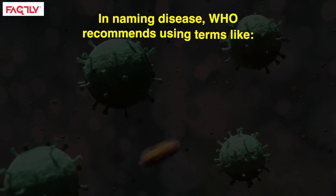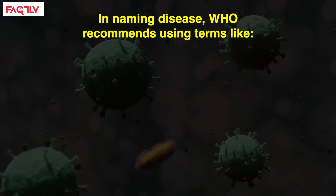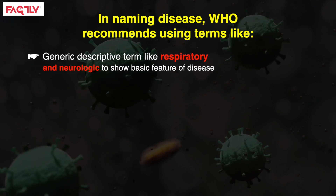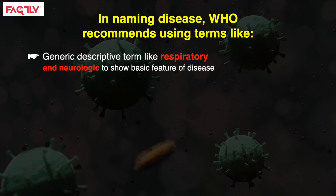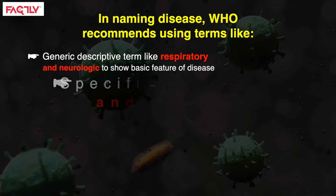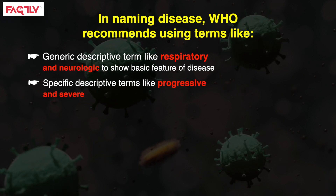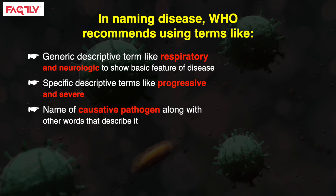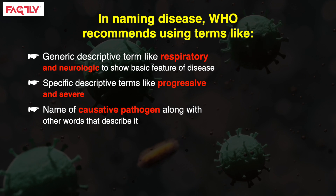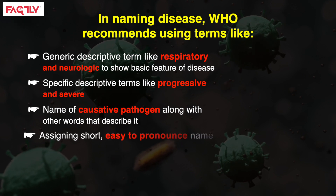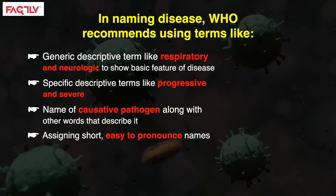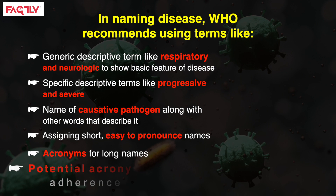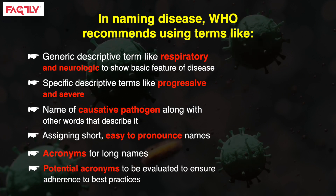In naming a disease, the WHO recommends using terms like a generic descriptive term — such as respiratory and neurologic — to show a basic feature of the disease that is unlikely to change, as well as specific descriptive terms like progressive and severe, and the name of the causative pathogen along with other words that describe it. Assigning short, easy-to-pronounce names is another guideline. Acronyms may be assigned for long names, and potential acronyms will be evaluated to ensure adherence to best practices.